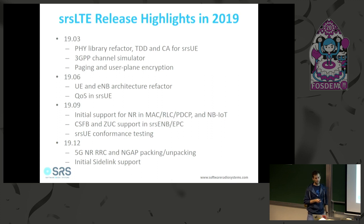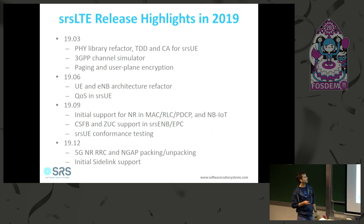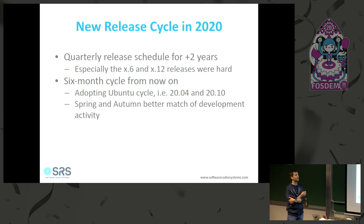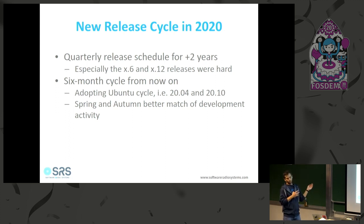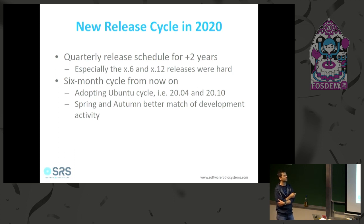For 2020 we are planning to change our release cycle. The past two years on a three-month cycle have been quite stressful — it takes a lot of time to prepare releases, merge pull requests, do quality assurance, and avoid regressions. The 06 and 12 releases were especially hard because they were close to Christmas when everyone was on vacation.